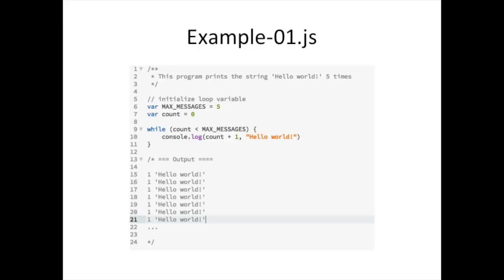Here's my example code. I have a variable called max set to five messages to print, and a variable called count. I use count in my while loop condition: while count is less than max, print a message. The first time at line 9, count is 0, which is less than 5, so that's true and I print a message. But I go back around and count is still 0 — this loop will go on forever because nothing inside the iteration updates count to eventually make the condition false.